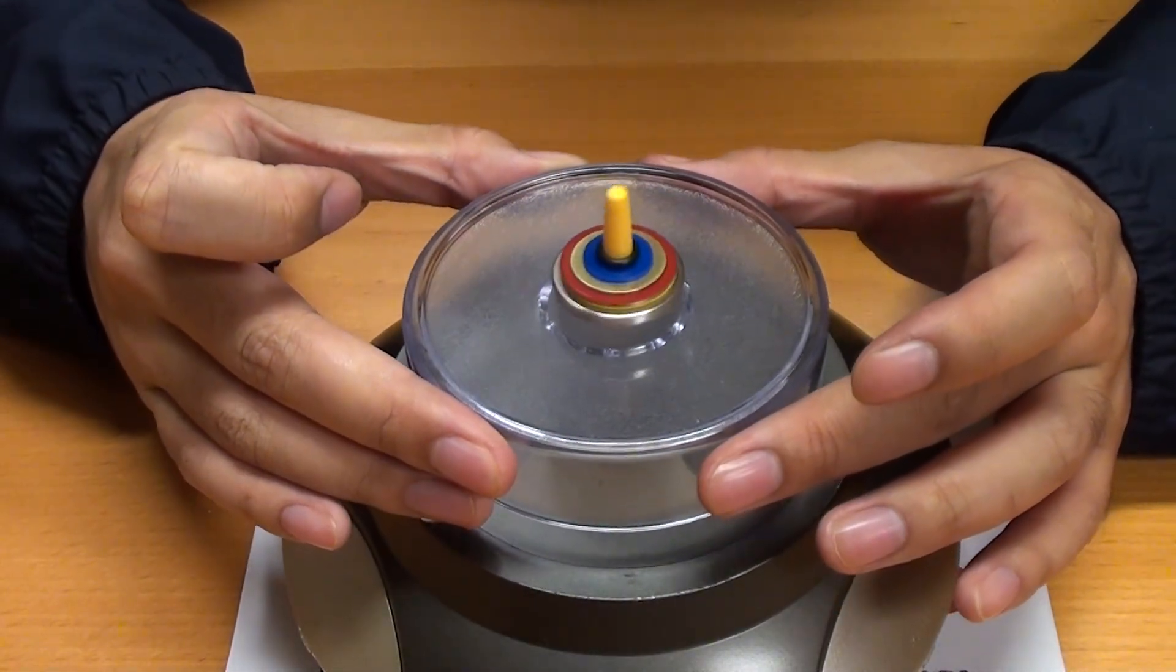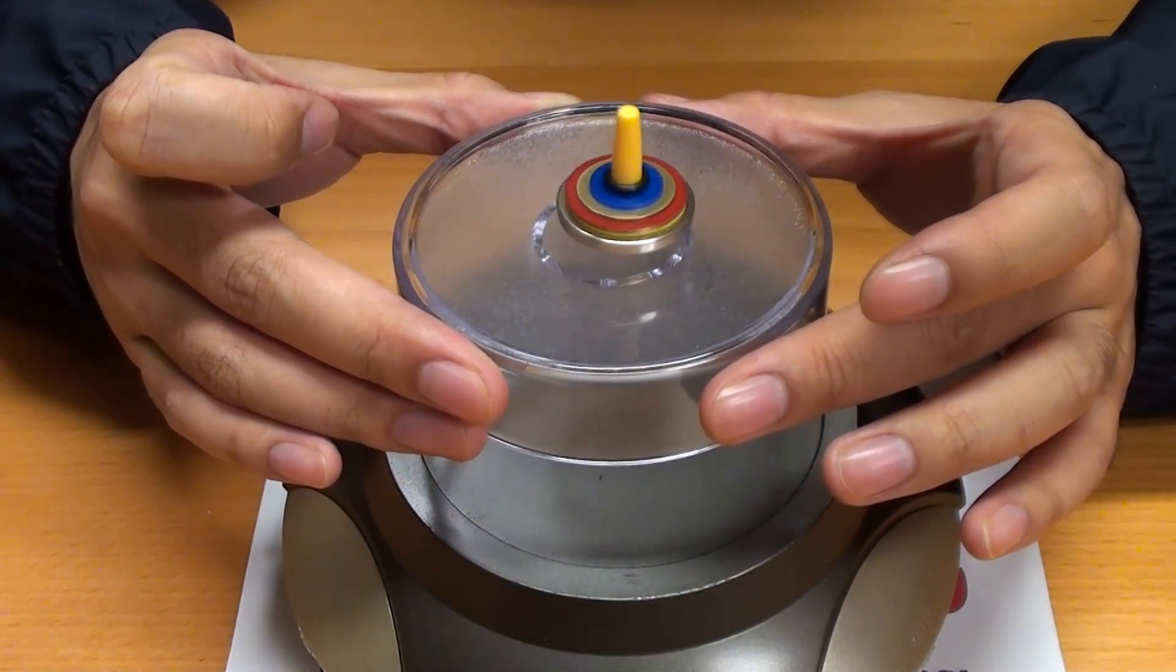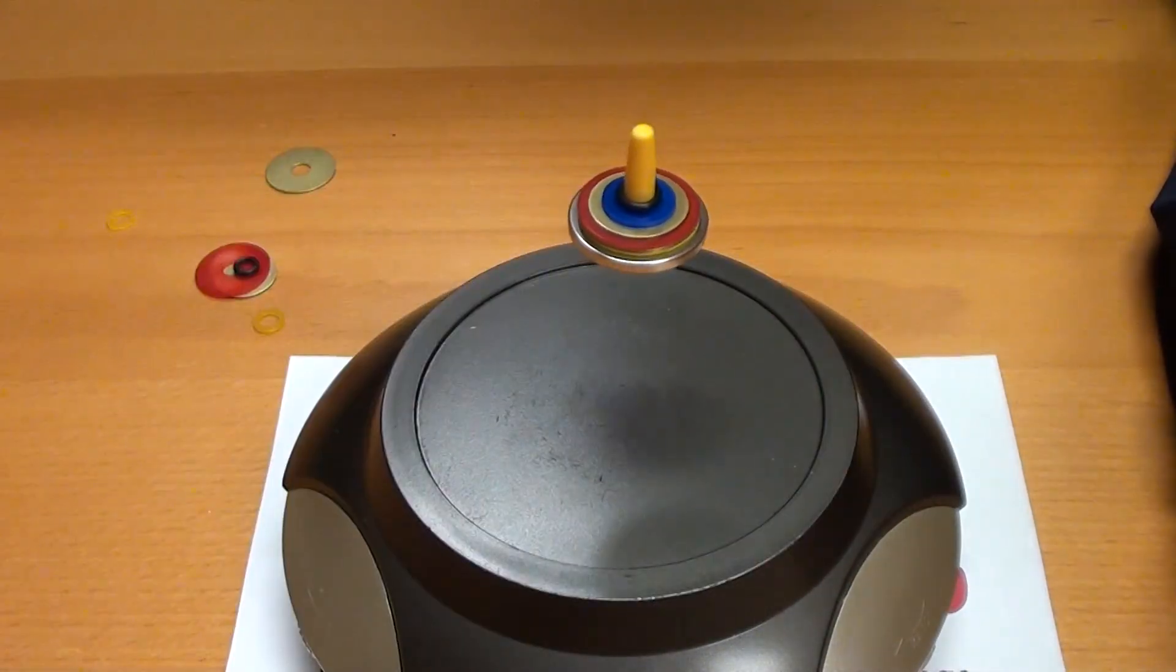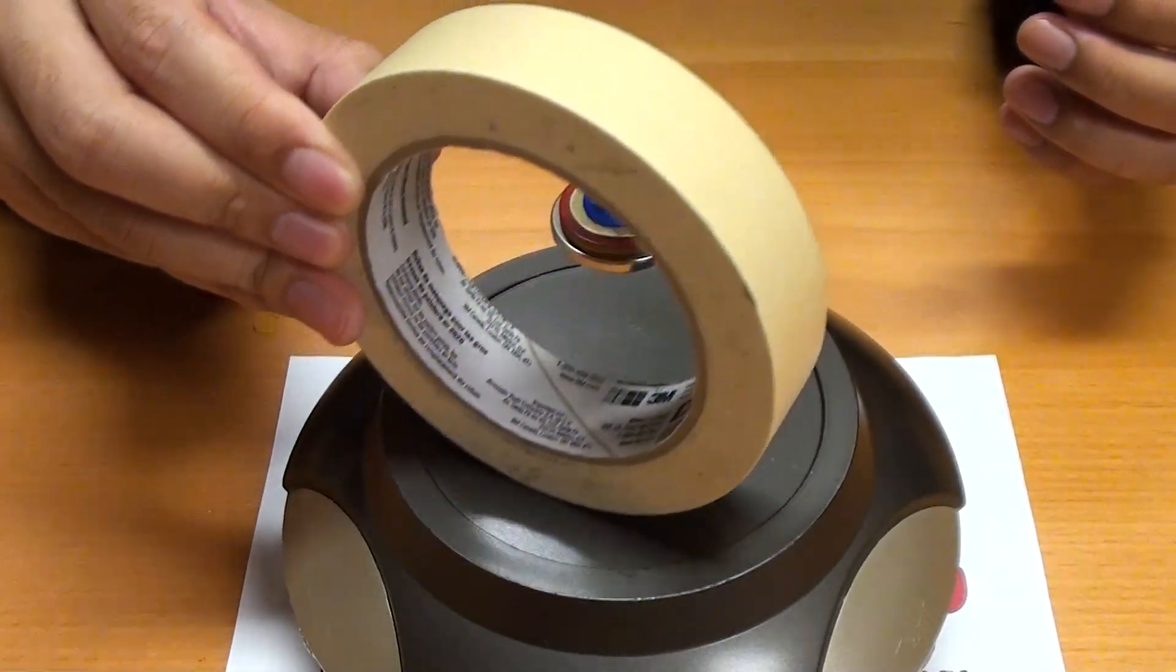This introduces gyroscopic levitation to prevent the magnet from flipping over. We now lift the magnet into position and because we added just the right amount of weight the magnet is just heavy enough to stay down but light enough that the repulsion of the base magnet keeps it up.